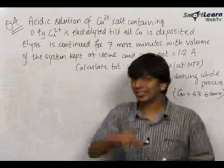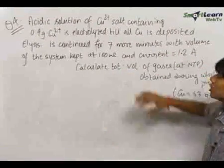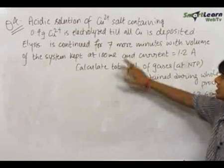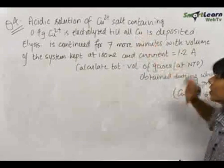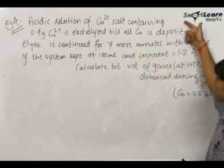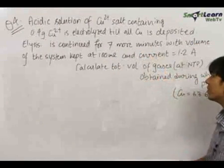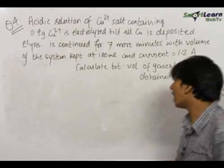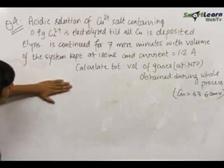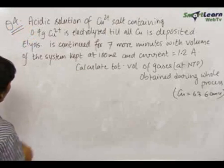The fourth question is a pretty interesting and important problem. We have an acidic solution of CuSO₄ containing 0.4 grams of CuSO₄, which is electrolyzed until all the copper is deposited. Electrolysis continued for 7 more minutes after this, with volume of the system kept constant at 100 mL and current equal to 1.2 amperes. We need to find the total volume of gases at NTP obtained during the whole process.